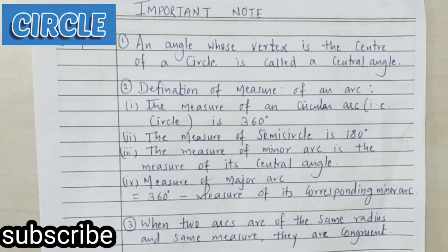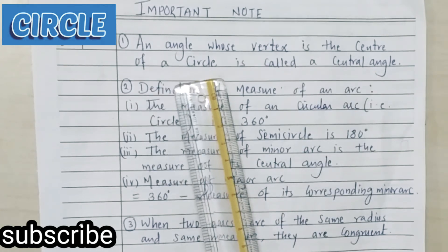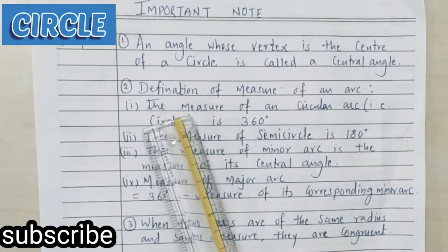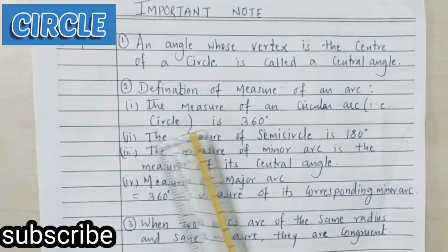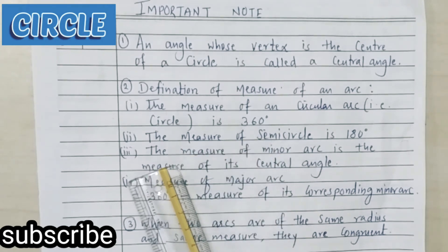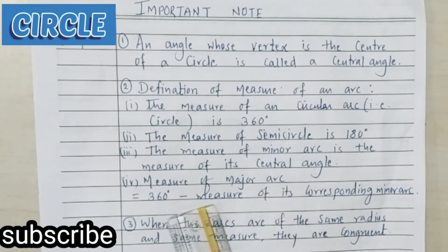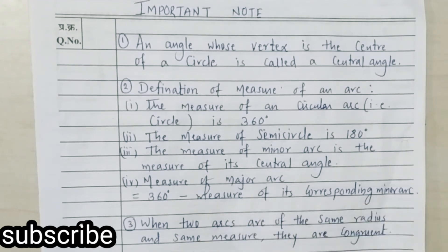Before we proceed, let us see some important notes in the chapter circle. First, an angle whose vertex is the center of the circle is called a central angle. The measure of a circular arc is 360 degrees. The measure of a semi-circular arc is 180 degrees. The measure of a minor arc is the measure of its central angle. The measure of a major arc is 360 minus the measure of its corresponding minor arc. When two arcs of the same radius have the same measure, they are congruent.